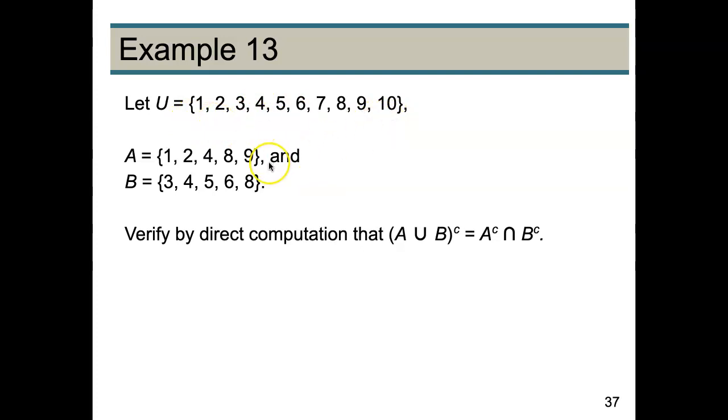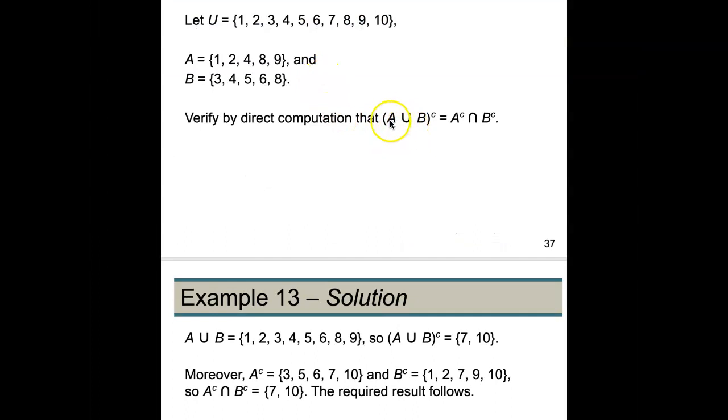So let's do a more concrete example. We're going to let U be the set of integers between 1 and 10. We're going to let A be {1, 2, 4, 8, 9}, B be {3, 4, 5, 6, 8}, and we are going to figure out that (A ∪ B)^c is the same as A^c ∩ B^c.